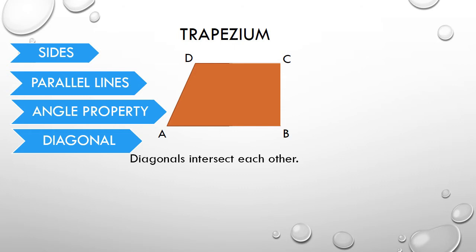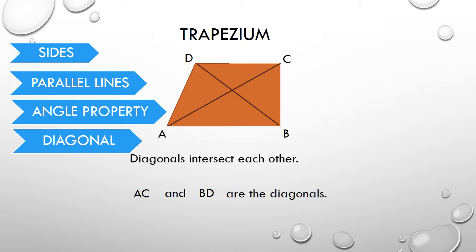The diagonal. The diagonals of a trapezium intersect each other inside the figure. Let us draw the diagonals, that is AC and BD. When we draw AC and BD, they intersect each other inside the figure. So AC and BD are the diagonals of the trapezium.